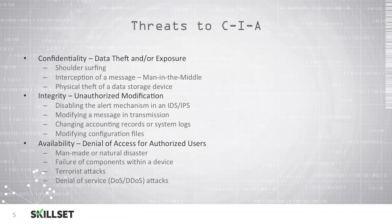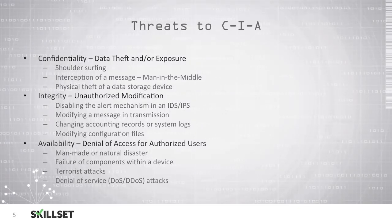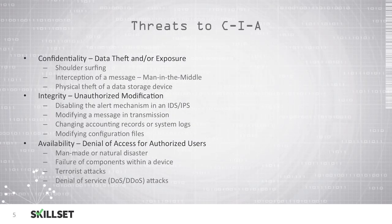For integrity, an individual could attempt to disable alerting mechanisms in intrusion detection and prevention systems, then access and modify data without administrators being alerted. Individuals could also modify messages in transit — for example, an attacker could change the dollar amount and recipient in an email payment request, causing funds to be sent to the wrong person. An attacker could also change accounting records or system logs to hide their presence, or modify configuration files to cause systems to behave inappropriately.